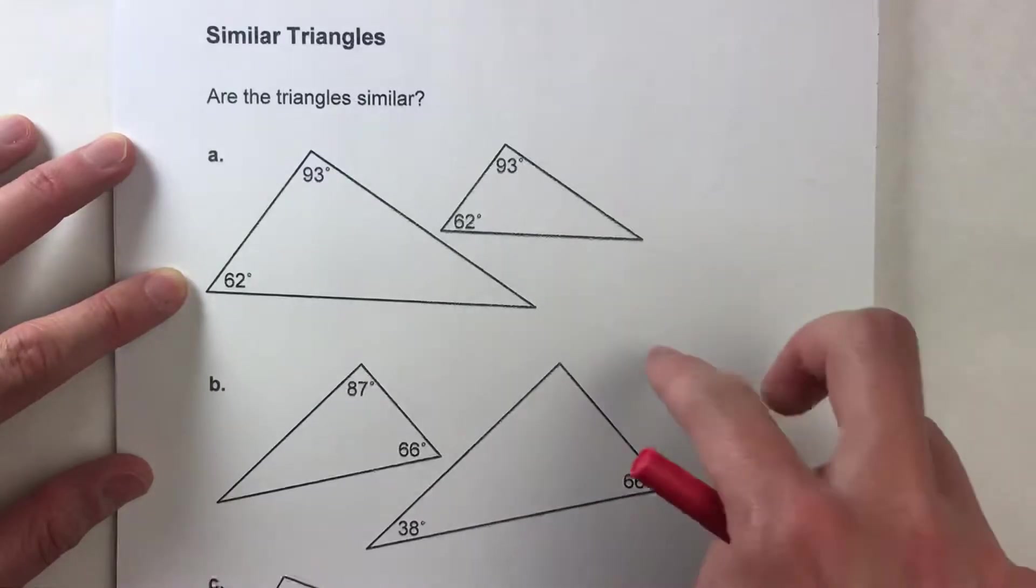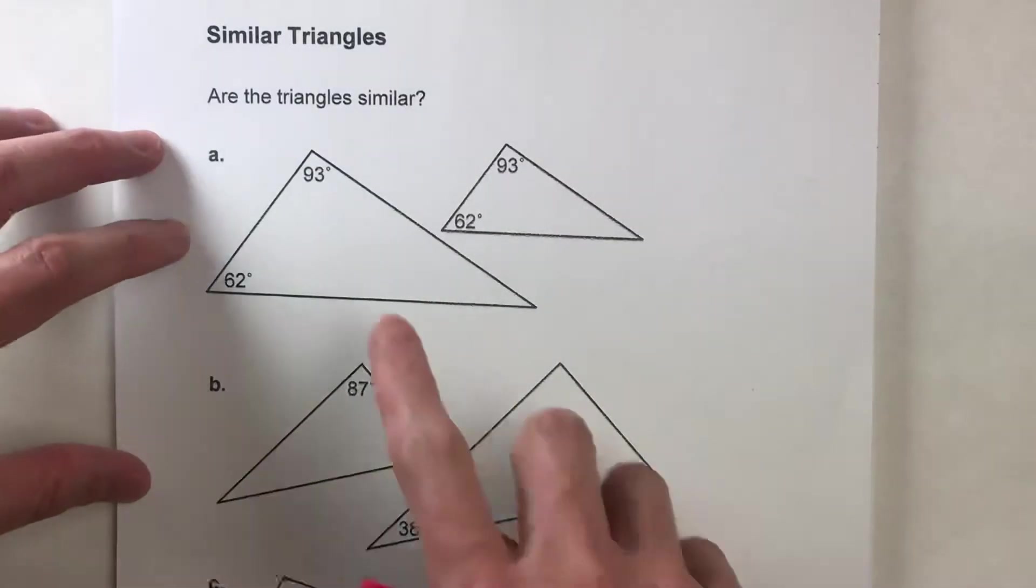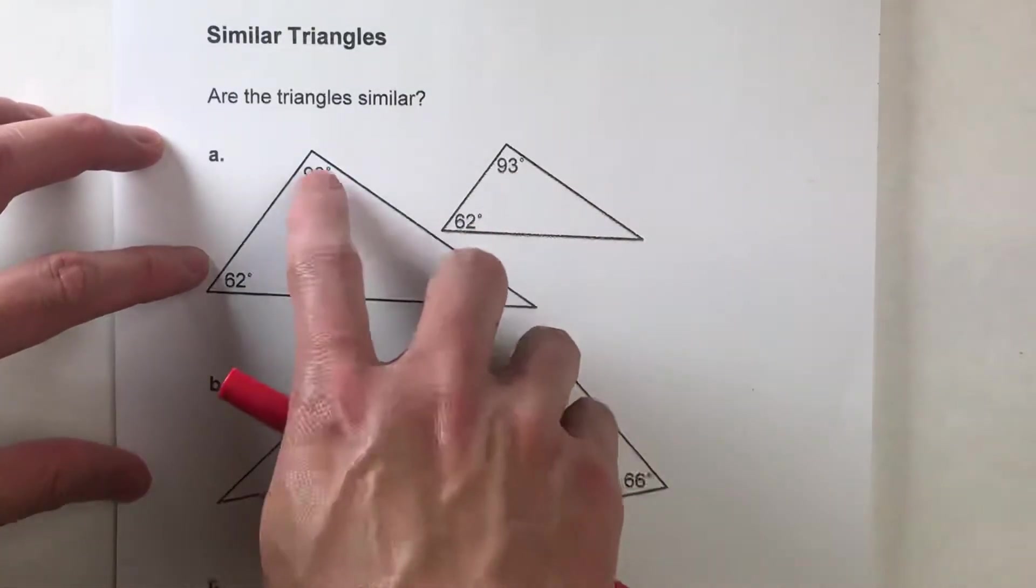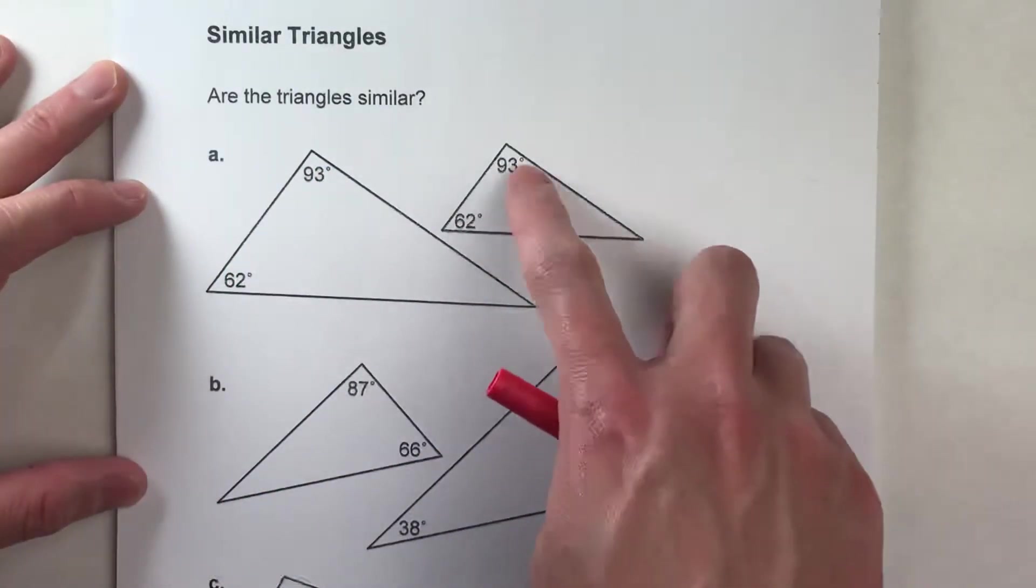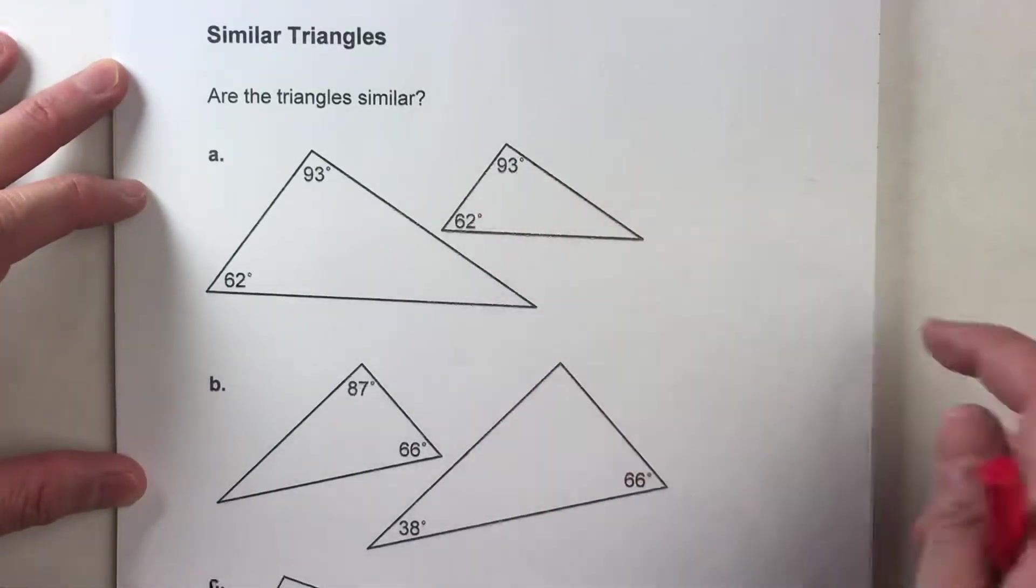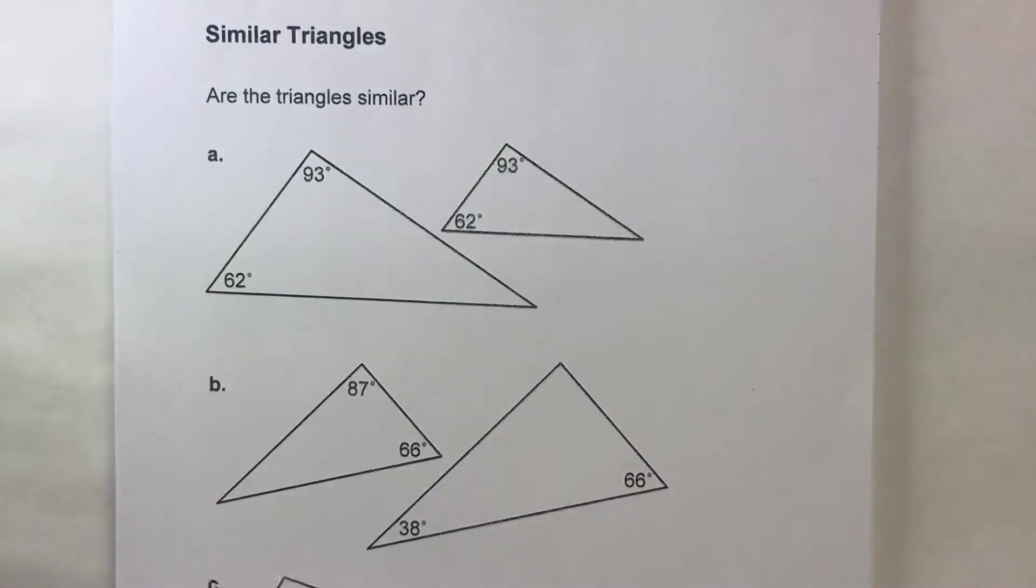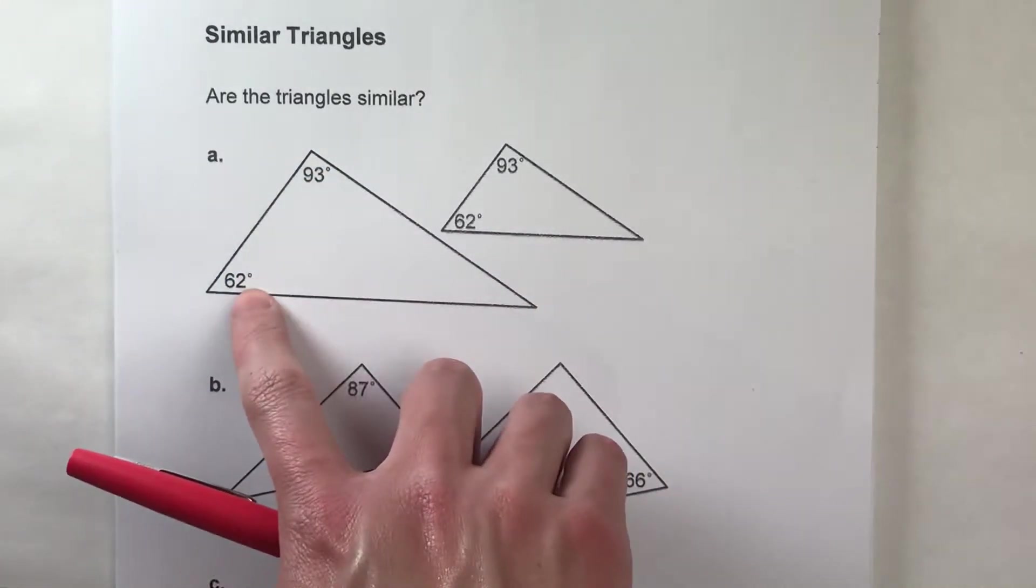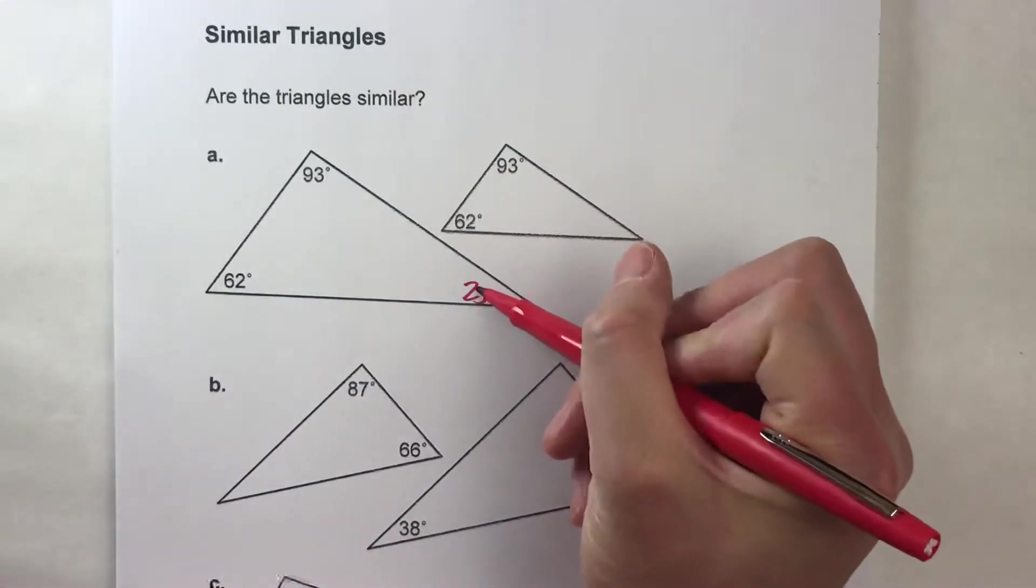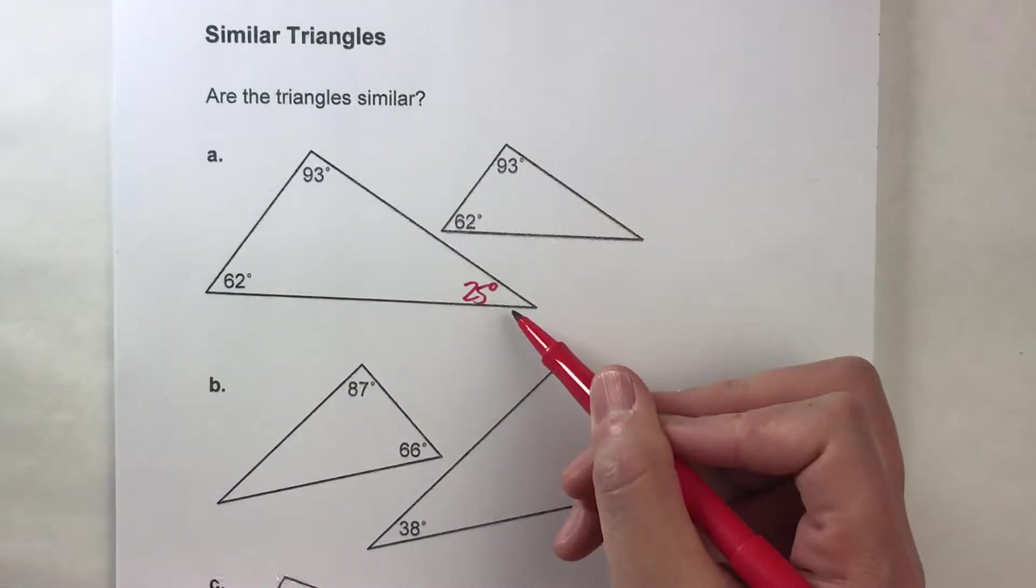The easy way to tell if two triangles have the same shape is by checking their angles. You see if this one is truly a bigger version of this one, the three angles will be exactly the same as the other three angles over here. So let's test it out. We know the angles in the triangle always add up to 180, so 93 plus 62 is 155 plus 25 degrees. So this angle here has to be 25 degrees.